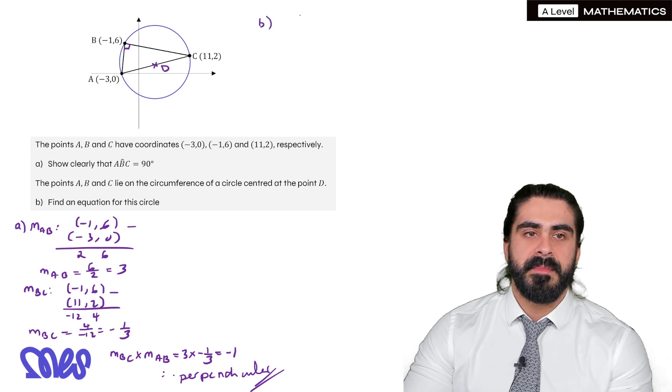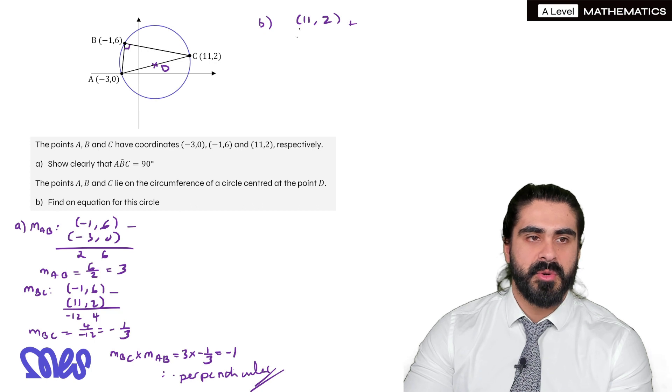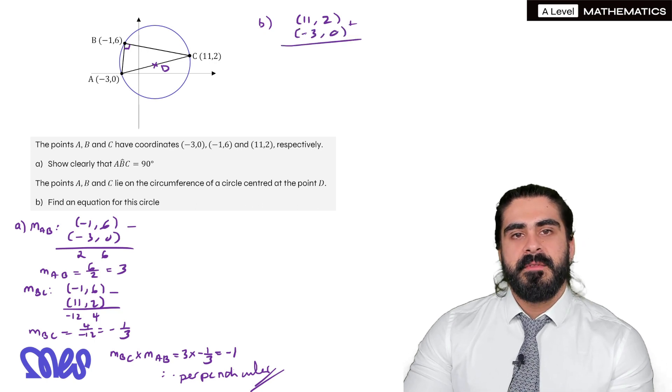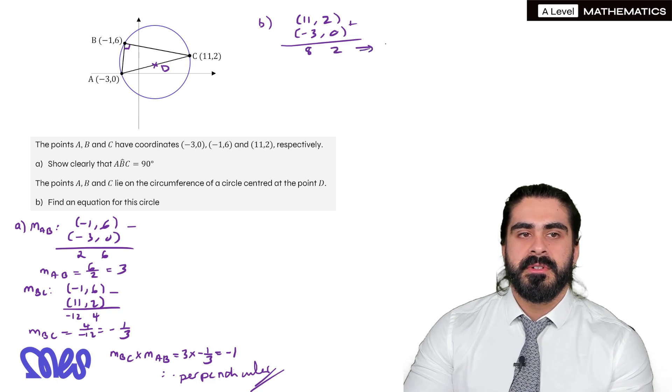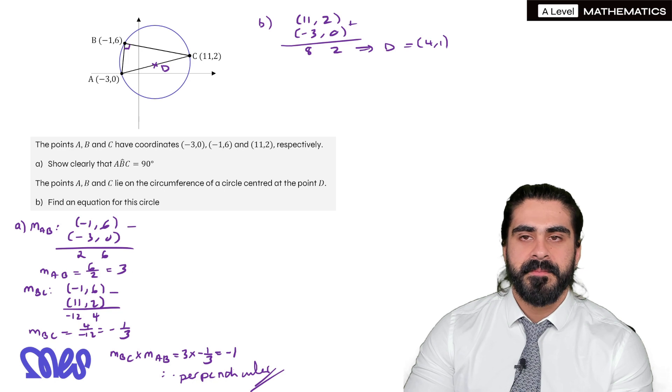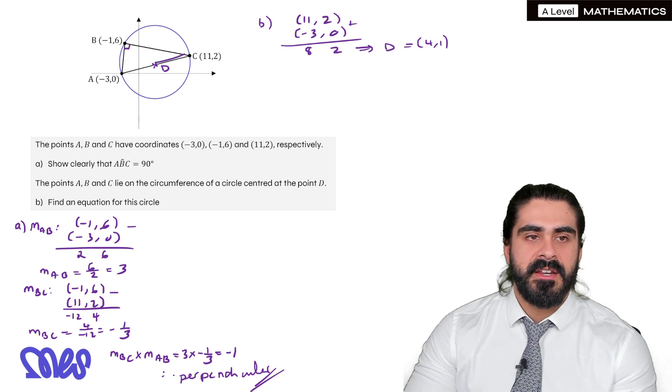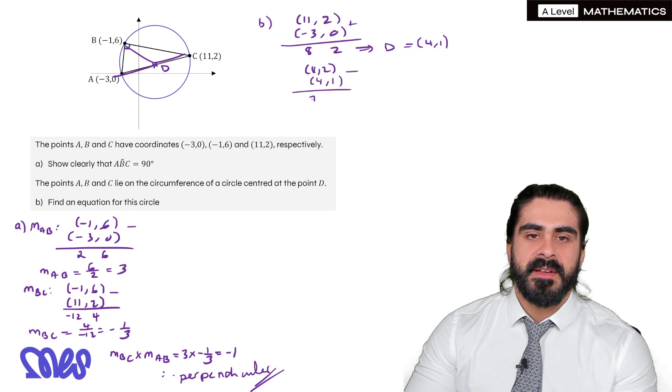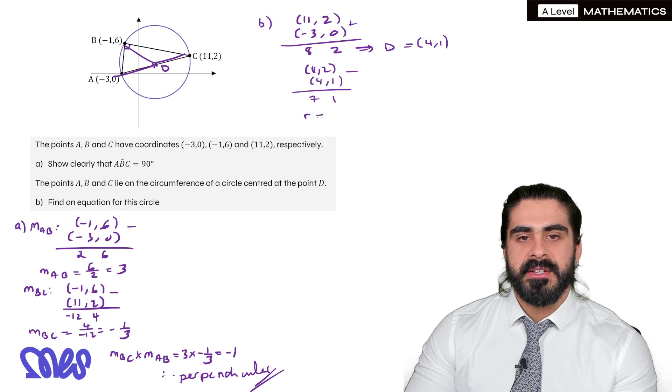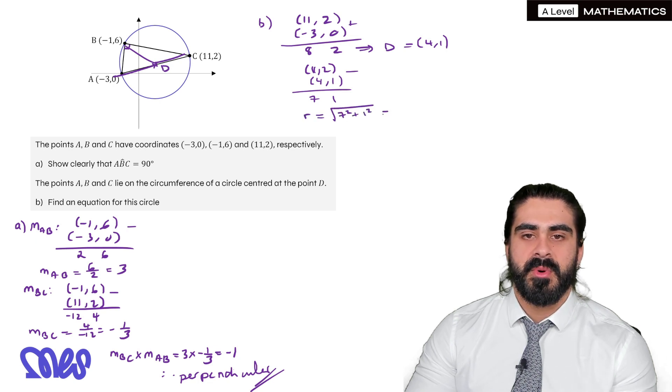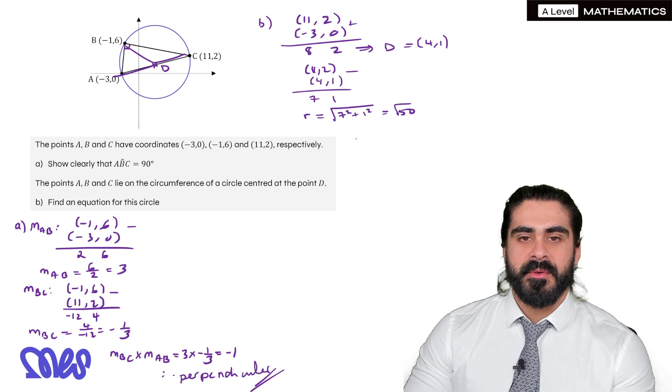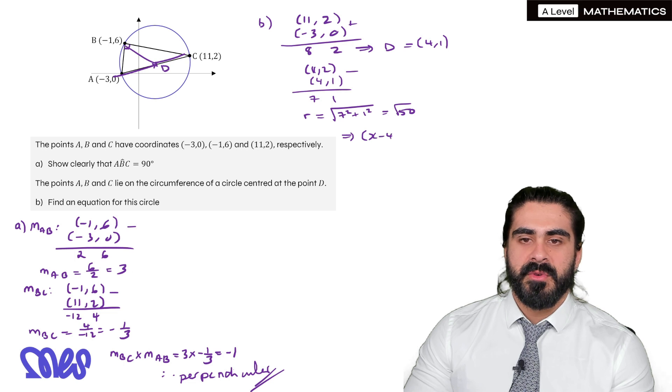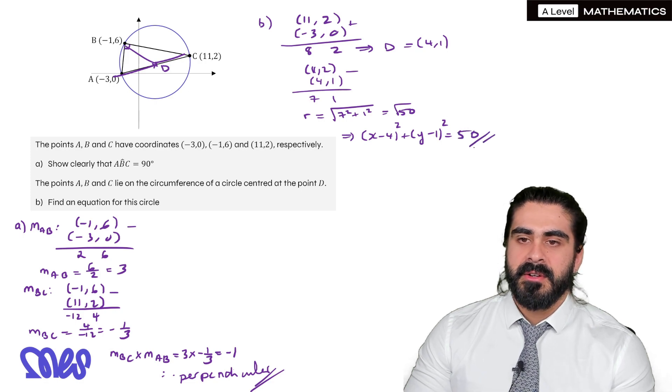This makes the problem much easier. To work out D we need to work out the midpoint. So we add the coordinates of C and A. 11 minus 3 is 8, 2 plus 0 is 2, so the coordinates of D is 4, 1. Now we need to work out the distance between D and any point on the circumference. 11, 2 minus 4, 1. 11 minus 4 is 7, 2 minus 1 is 1, so the radius is root of 7 squared plus 1 squared which is root 50. So the equation of our circle is x minus 4 squared plus y minus 1 squared equals 50.